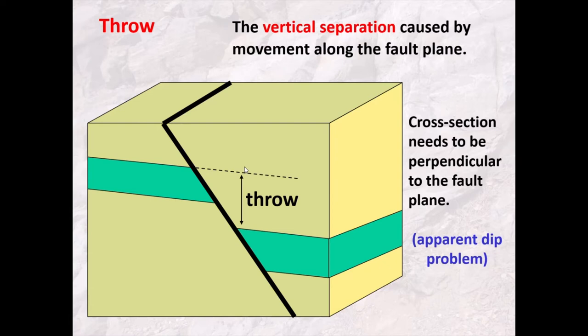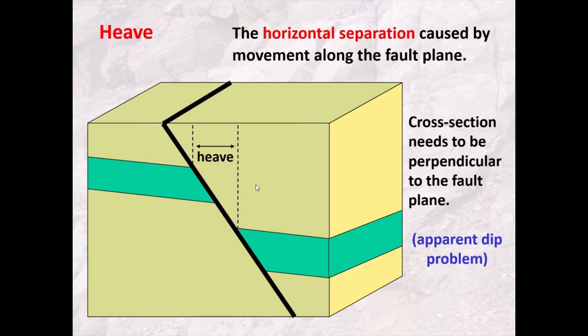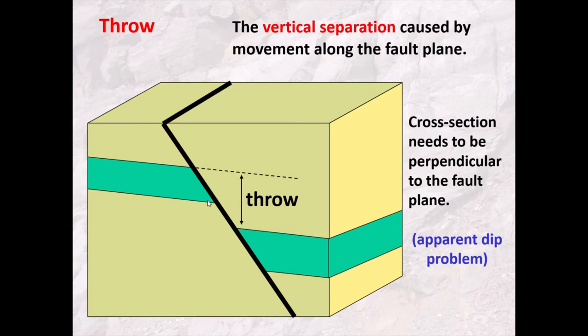The component of dip slip that is purely vertical is called the throw. The horizontal component of dip slip is called the heave — the amount of horizontal distance that rock has effectively moved. So throw is the vertical component, and heave is the horizontal component of the dip slip.